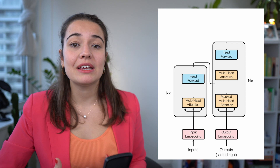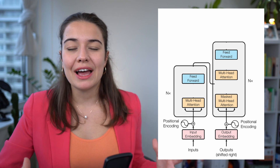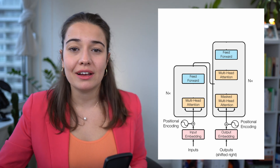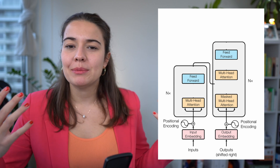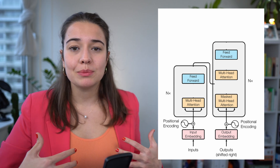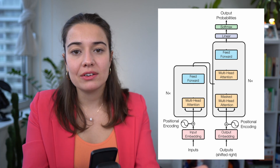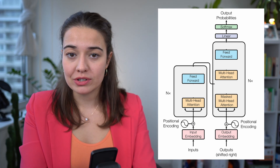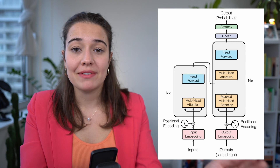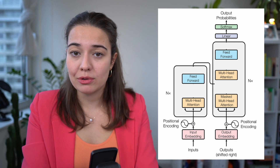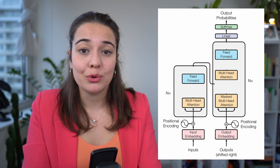On top of these word embeddings, we add positional encodings. Since transformers have no recurrence, the model has no way of knowing which word comes first or where a word sits in the sentence. By adding positional encoding, we inject information about each word's position into the model. For the output, there is a linear layer and a softmax layer at the end of the decoders, producing a vector the length of the vocabulary, where each cell tells us how likely that word is to be the next word in the sequence.